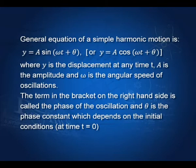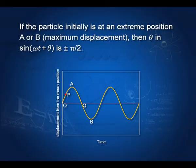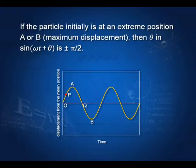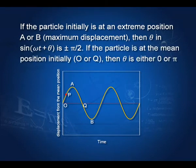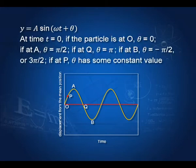θ is the phase at time t = 0. If the particle is initially at an extreme position (a or b), the displacement is maximum and θ in sin(ωt + θ) is ±π/2, since sin(π/2) = 1, giving position a or b. If the particle is at the mean position initially, then θ is either 0 or π, because sin(0) = 0.